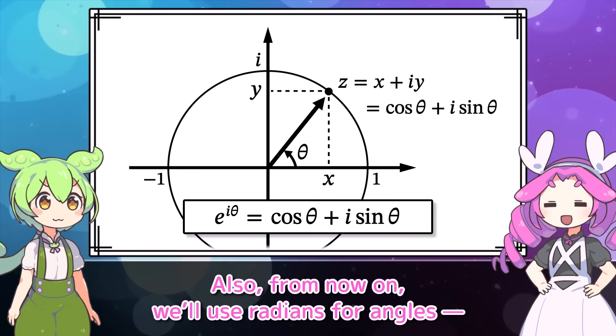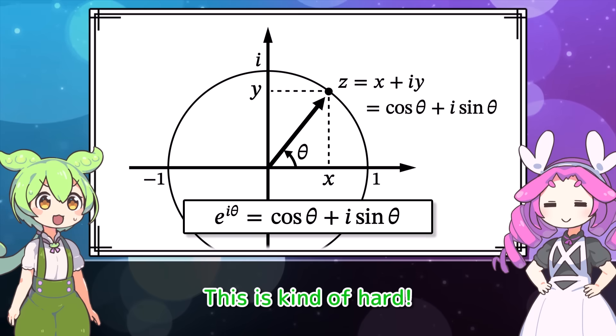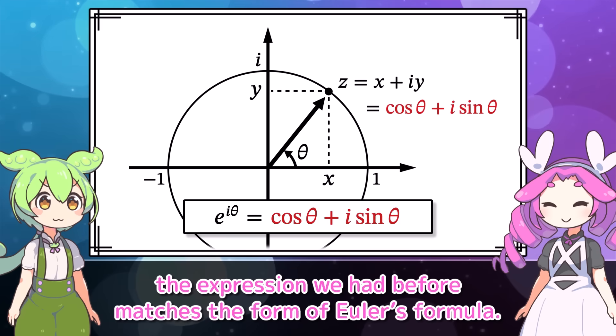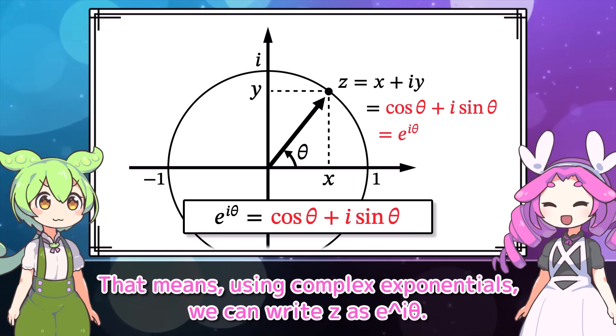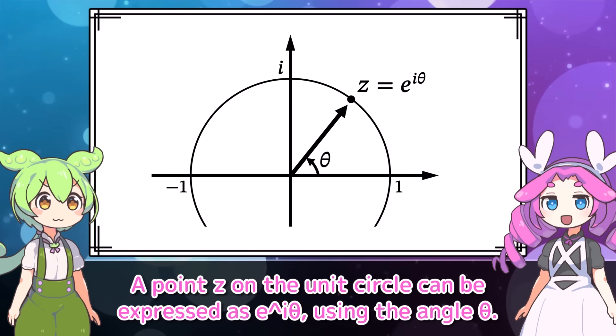You're really sharp today. Yes, if we want to handle polar coordinates using complex numbers, there's a very important formula involved. On the complex plane, let's draw a circle centered at the origin with radius 1. That's what we call the unit circle. Then we place the point z = x + iy on the circle. And let theta be the angle that this vector makes with the real axis, that is, the x-axis.